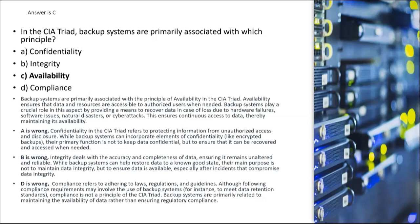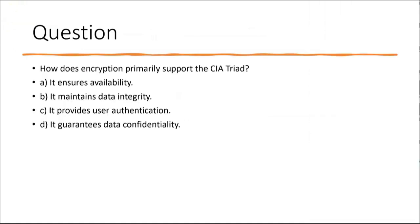Compliance is wrong — it refers to adhering to laws, regulations, and guidelines. Although following compliance requirements may involve backup systems, compliance is simply not a principal element of the CIA security triad. So letter C, availability, is correct. Next question: How does encryption primarily support the CIA triad?